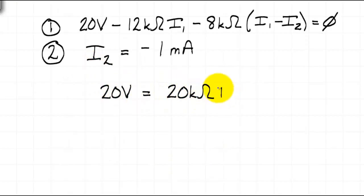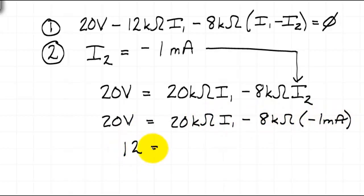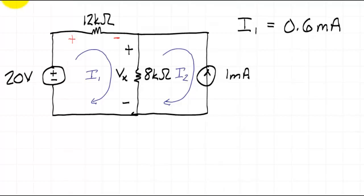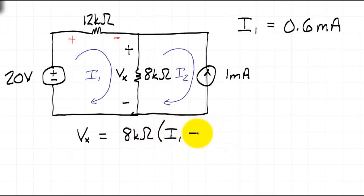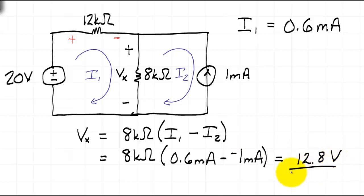Simplifying these two equations, I can write 20V equals 20kΩ times I1 minus 8kΩ times I2. Since I2 is negative 1mA, substituting into the first equation gives I1 equal to 0.6mA. Looking back at our circuit, Vx equals the 8kΩ resistance times the current that agrees with the passive sign convention minus the current that opposes it. Substituting our numbers, Vx equals 8kΩ times the quantity 0.6mA minus negative 1mA, giving Vx equal to 12.8V.